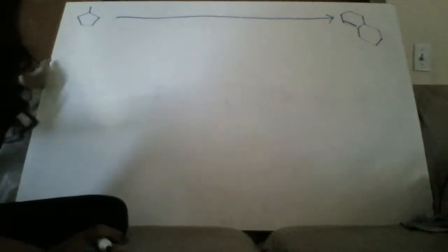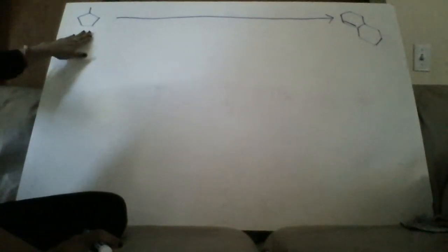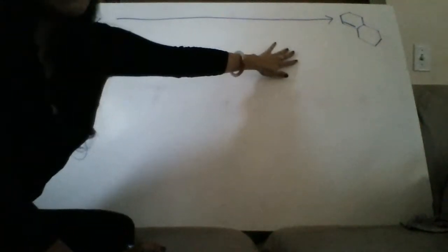All right, my name is Sonya Gleischer and I'm going to do an approximately nine-step retrosynthesis starting with this cyclopentane and we're going to end up with two six-membered rings.